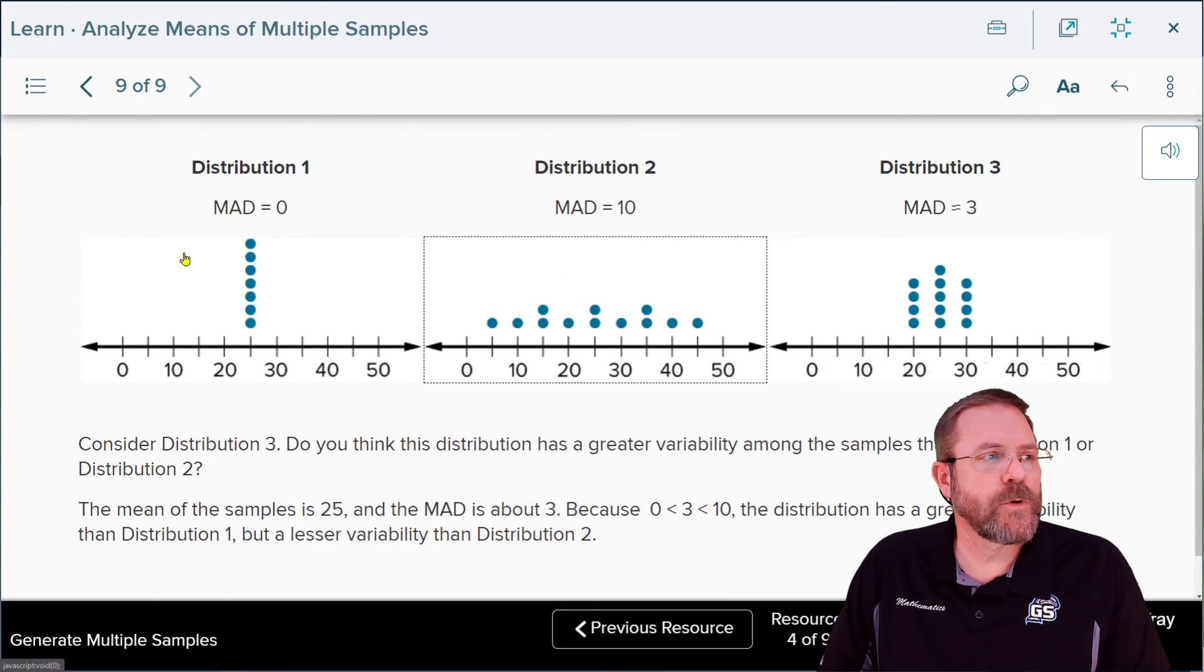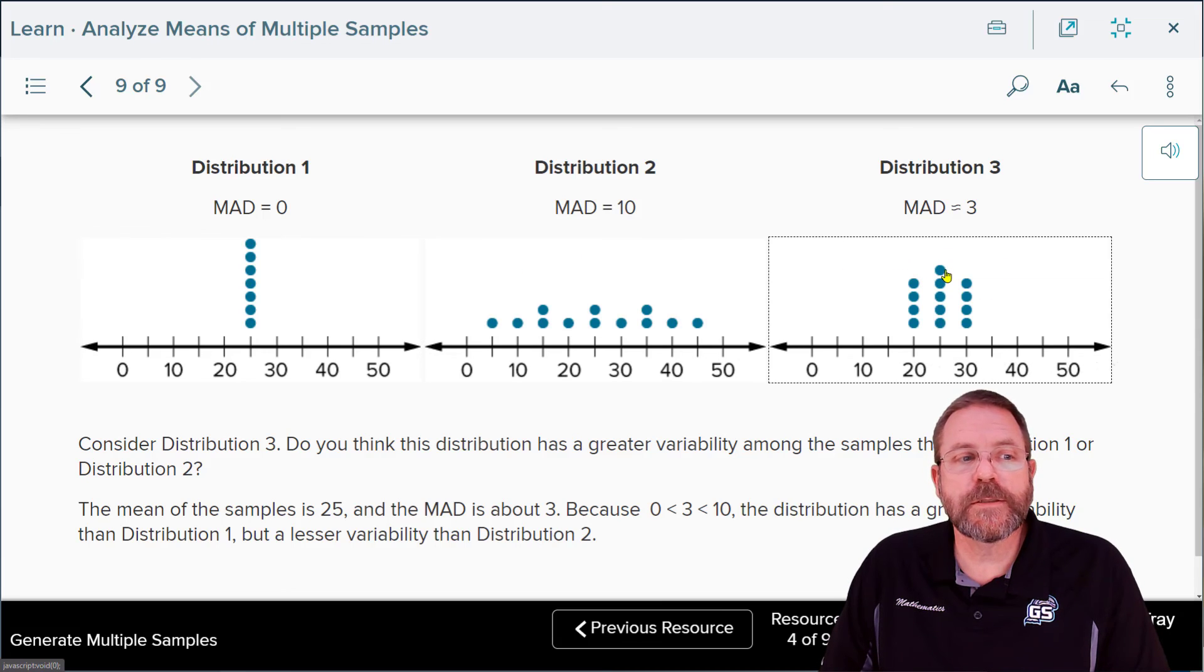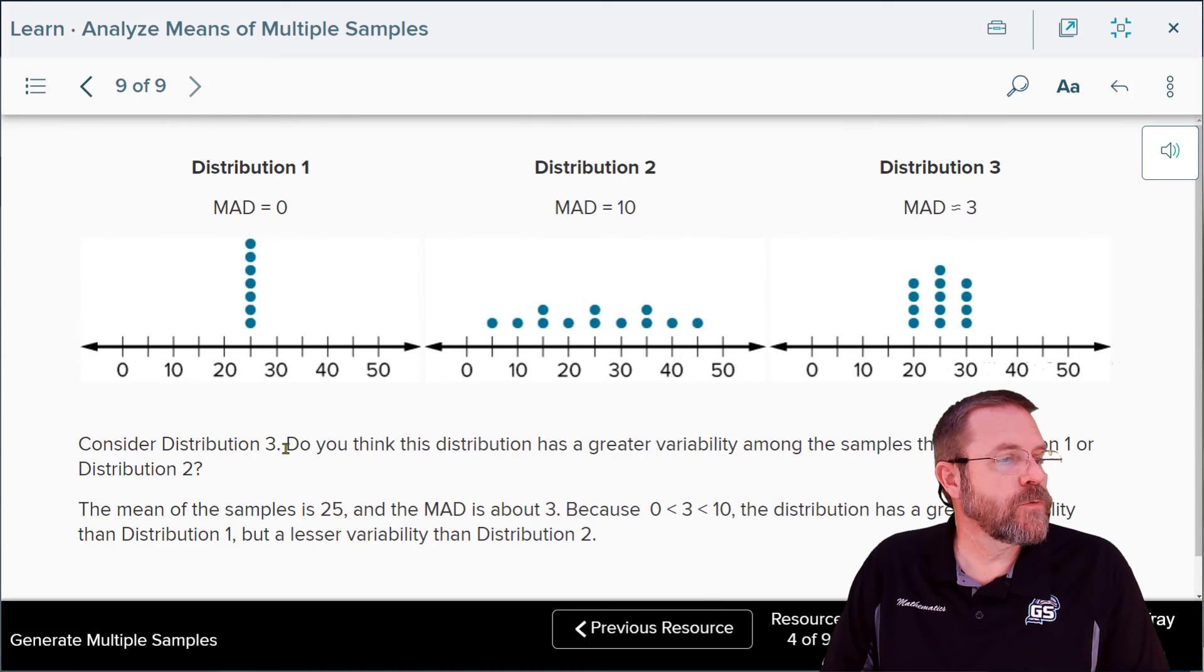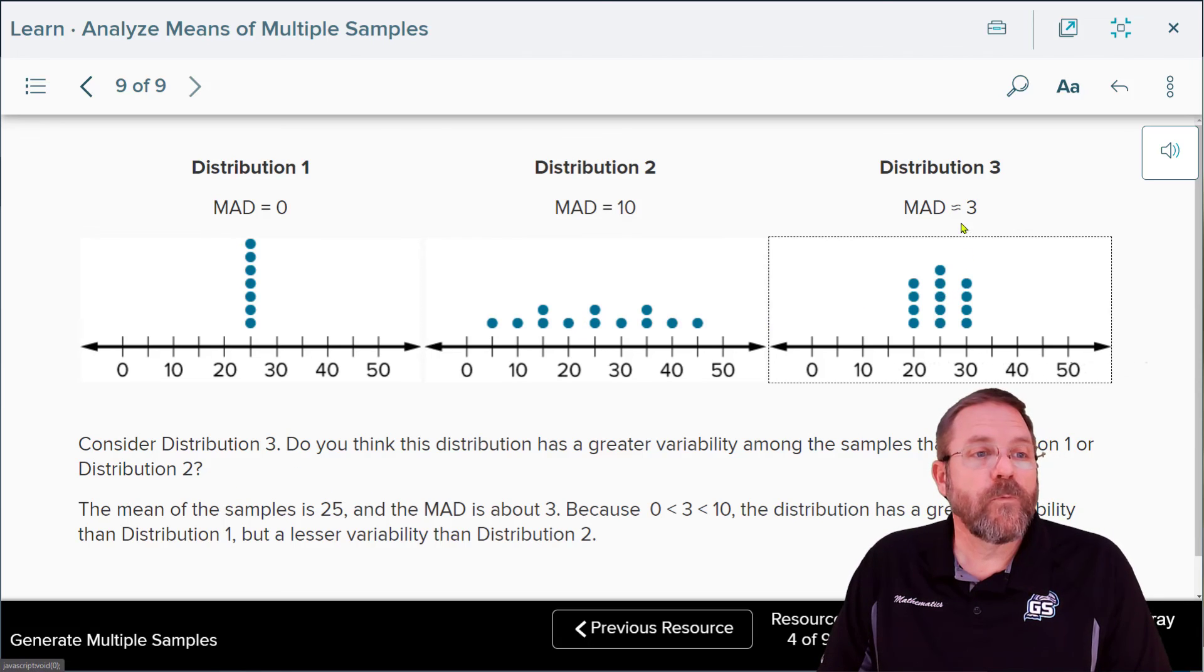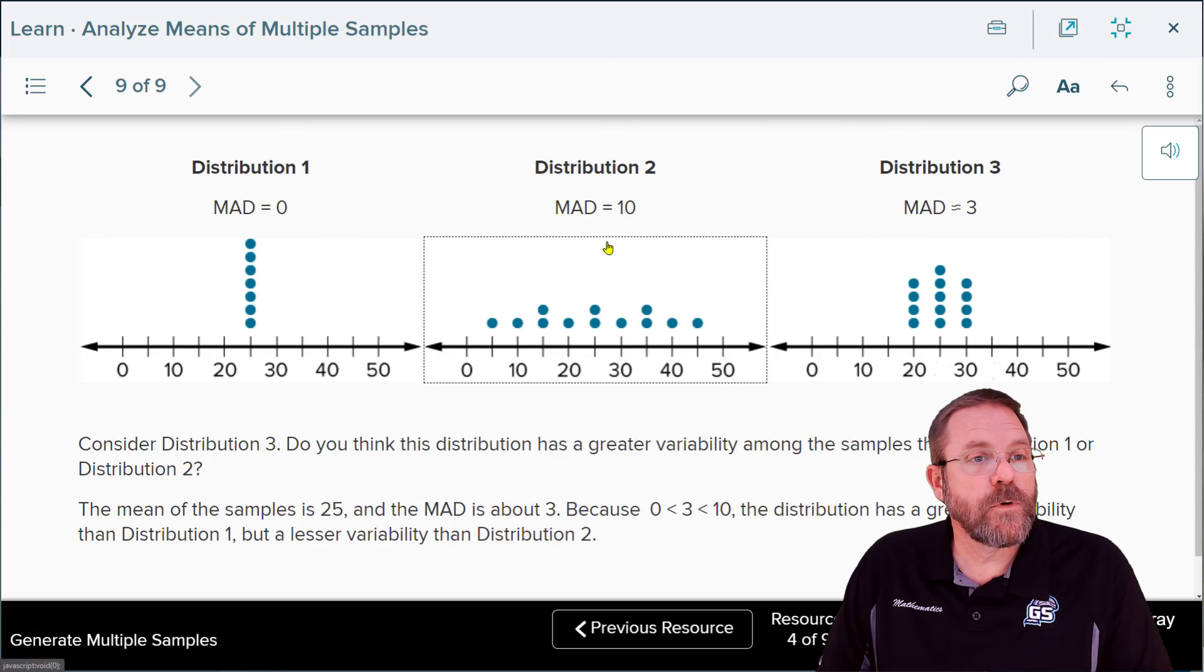Now let's take a look at these three different distributions. We had distribution 1 and 2 we've already looked at, and distribution 3 is the new one they've added. Consider distribution 3. Do you think this distribution has a greater variability among the samples than distribution 1? Absolutely it does because distribution 1 has 0 variability. Its mean absolute deviation was 0. This one has a mean absolute deviation of 3 showing that it was an average of 3 spaces away from the mean. And how about sample 2? Well, it's going to be less variability than sample 2 because here you have 3 and here you have 10.